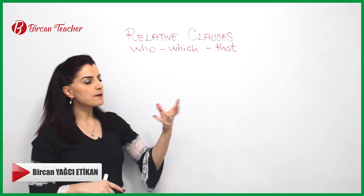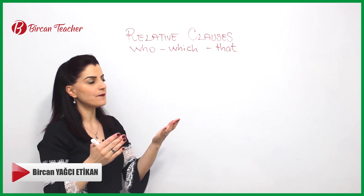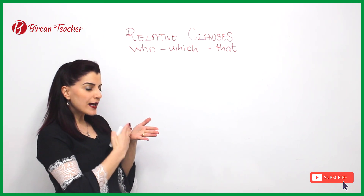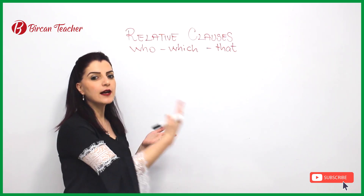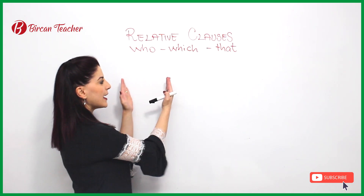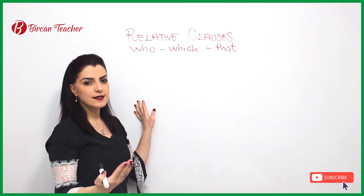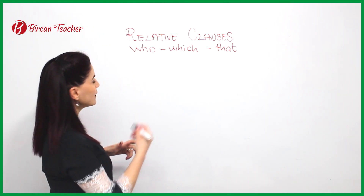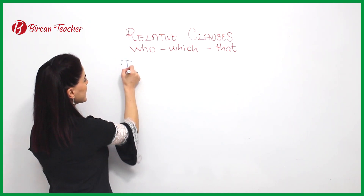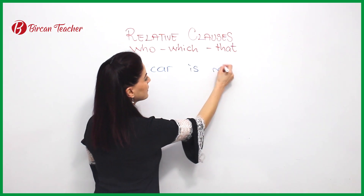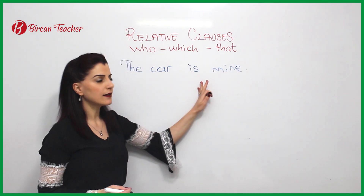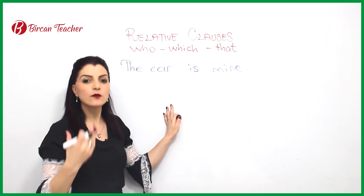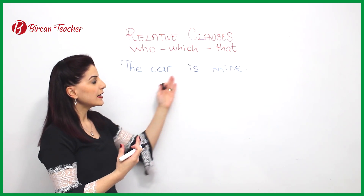In relative clauses, the important thing we should remember is that we have some item or some person and we have to define him, her, or it. Because when we say a general noun, we don't understand which object or which person we are talking about. For example, you say 'the car is mine,' but when I look outside there are too many cars and I don't understand which car is yours.